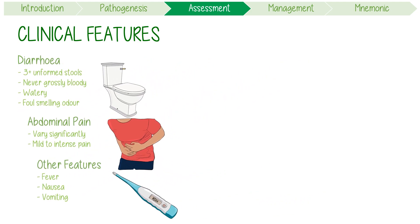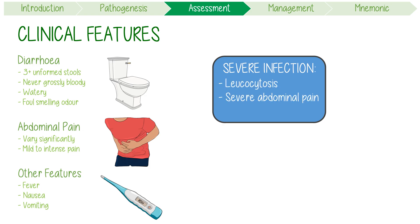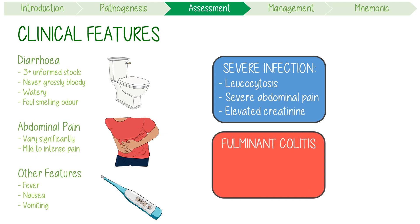C. diff infections can vary in severity. Severe infection is defined as any of the following: leukocytosis, severe abdominal pain, or an elevated serum creatinine. This can progress into fulminant colitis, previously described as severe complicated C. diff infection. This is characterized by either severe hypotension and shock, acute ileus with little diarrhea, or a megacolon, defined as a bowel dilation greater than 12 cm in the cecum.